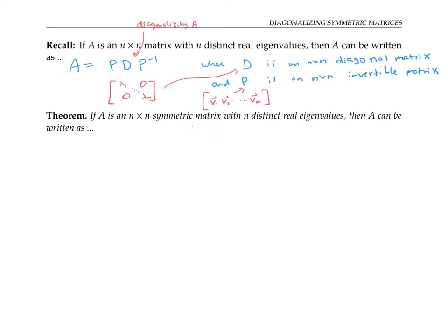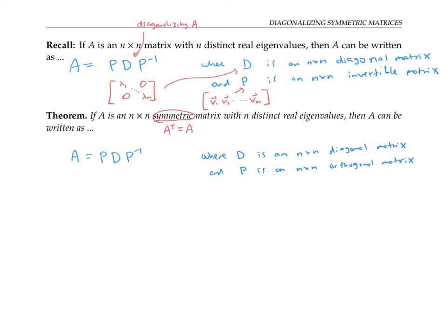Now suppose we add the condition that A is a symmetric matrix, meaning A transpose equals A. We still assume it has n distinct real eigenvalues, and A can still be written as P times D times P inverse, where D is an n by n diagonal matrix. But this time P is an n by n orthogonal matrix — a matrix whose column vectors form an orthonormal set. An orthogonal matrix is automatically invertible because its inverse is given by its transpose. So by starting with a symmetric matrix, we get P to be an orthogonal matrix with a little more structure.